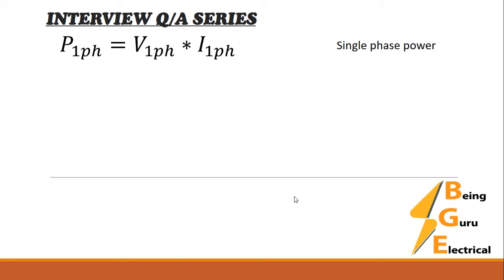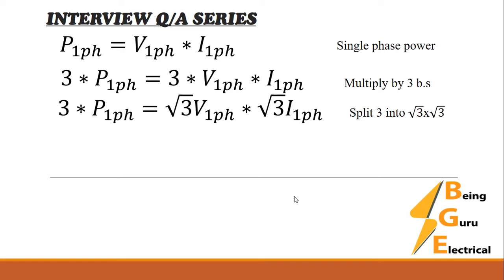So 3 times single phase power equals 3 times single phase voltage times single phase current. We can write 3 as √3 times √3. So 3 times single phase power equals √3 times single phase voltage times √3 times single phase current.